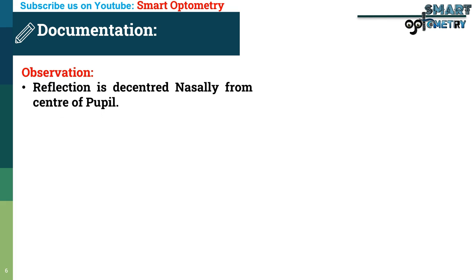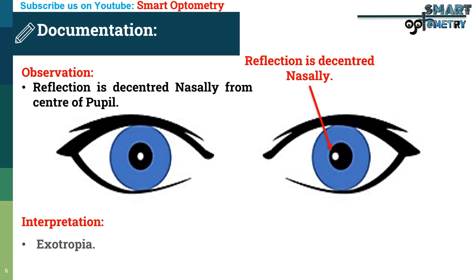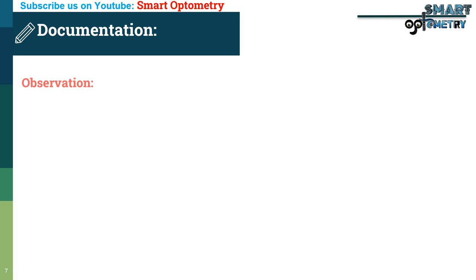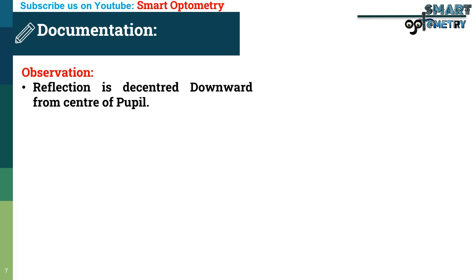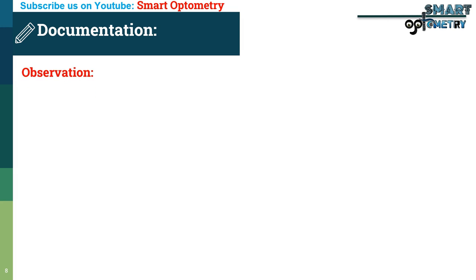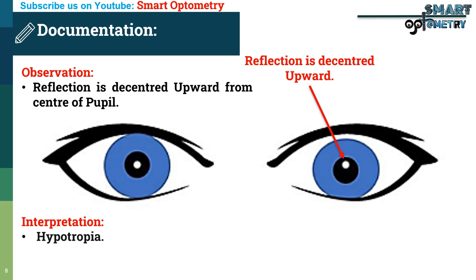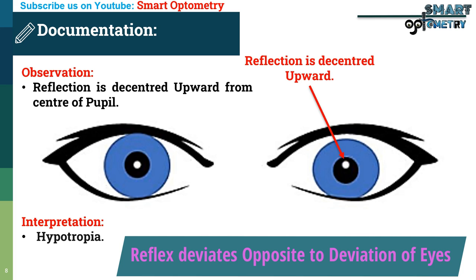Observation — reflection is decentered nasally from the center of pupil. Interpretation — exotropia. Observation — reflection is decentered downward from the center of pupil. Interpretation — hypotropia. Observation — reflection is decentered upward from the center of pupil. Interpretation — hypertropia. Always remember: the corneal reflex is decentered opposite to the deviation of the eyes. If the eyes move in (esotropia), the reflex will go out. If the eyes move out (exotropia), the reflex will move in.